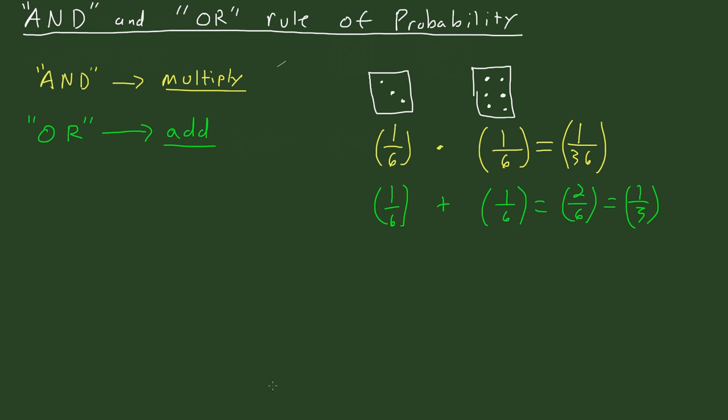So if you think about it, if you say you want something and something else, you're actually putting more of a restriction on what you want, and so therefore the probability is going to be less. As compared to if you wanted something or something else, it could be either one of those two, and so therefore you have less of a restriction, and the probability of either one of those things happening will be greater.